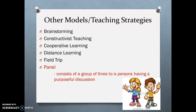Next is the panel method. A panel consists of a group of three to six persons having a purposeful discussion — similar to an interdisciplinary or multidisciplinary approach. For example, if your topic is about poverty, you invite three to six people such as a politician, a farmer, a lawyer, and a doctor, then you ask their opinions and points of view about the topic.